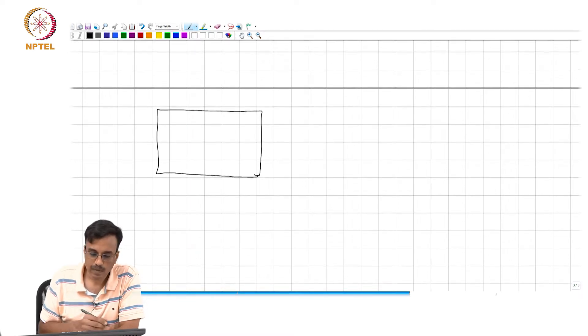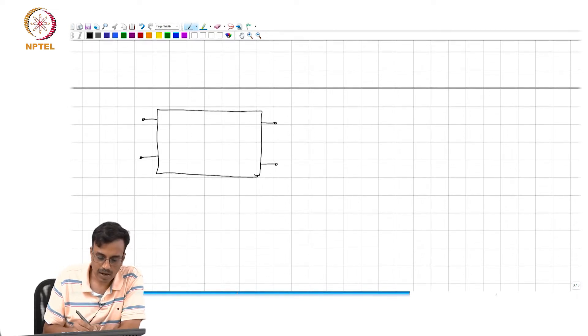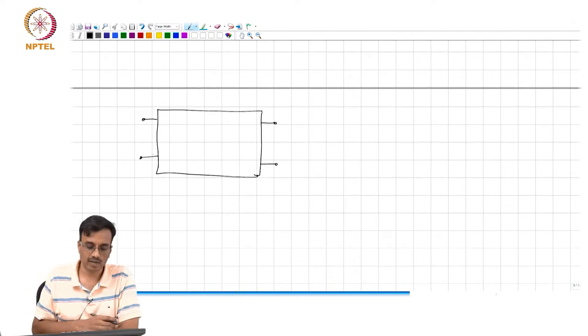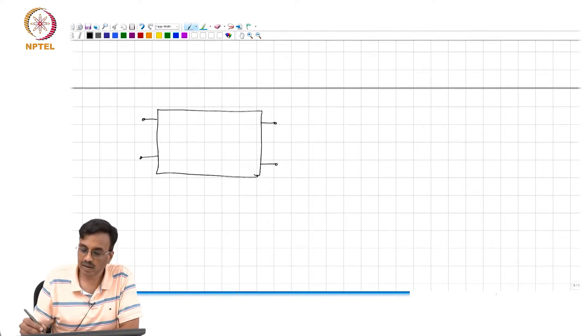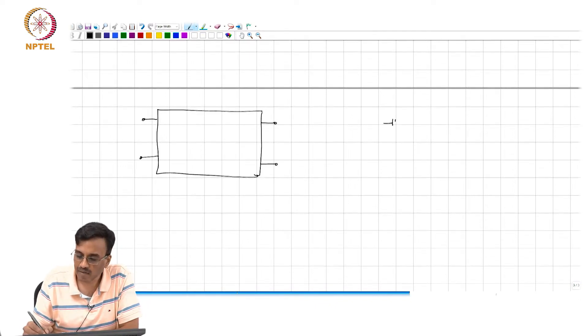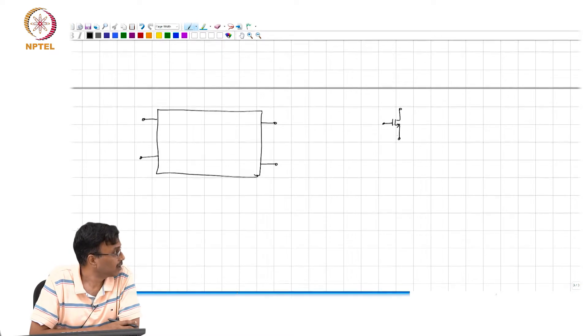For example, we have seen similar situations before. So we have a big amplifier or a big network inside with multiple R's, L's and C's and transistors.